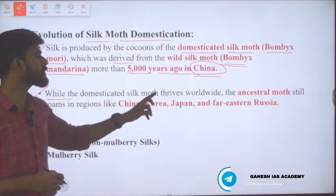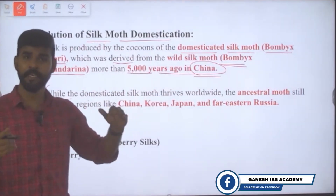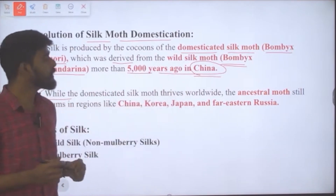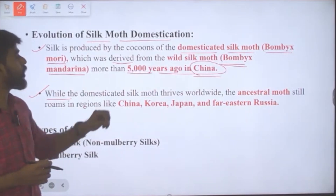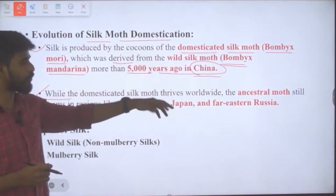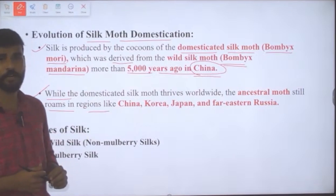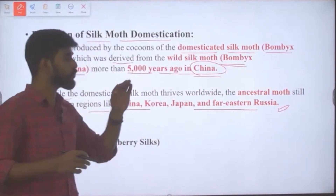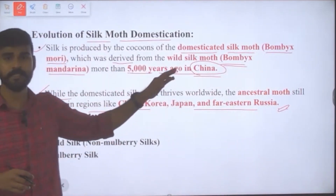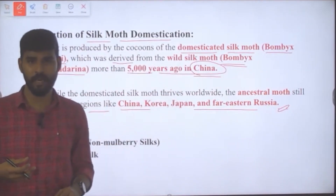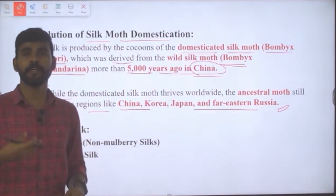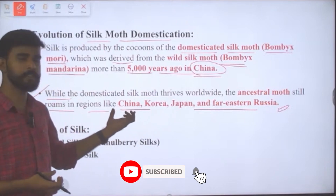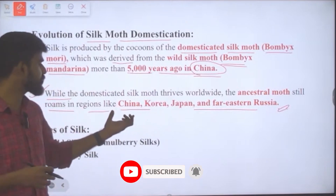While the domesticated silk moth now thrives worldwide — including India — the ancestral wild silk moth, Bombyx mandarina, still exists in regions like China, Korea, Japan, and far eastern Russia. So the wild ancestor from which the domesticated silk moth was derived is still alive in parts of the world.